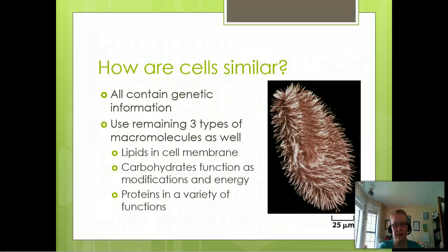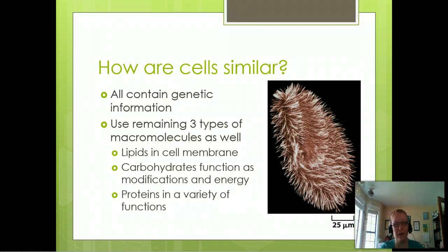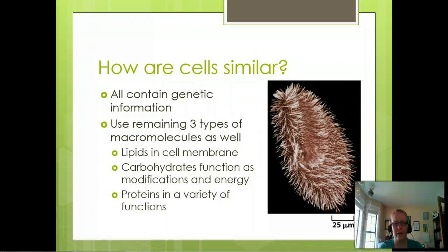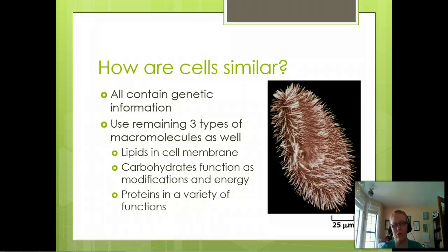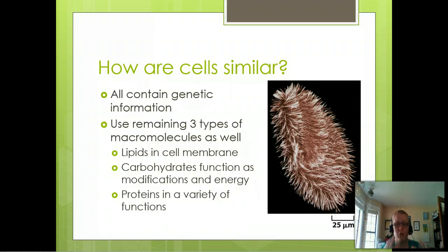All cells contain genetic information — DNA and RNA. All cells also contain all three types of macromolecules: lipids, carbohydrates, and proteins. Lipids primarily make up the cell membrane, and in multicellular organisms they also make up organelle membranes. Carbohydrates mainly serve as the energy source for cells, but they also have an important role in modifying lipids and proteins to change their function within the cell. Proteins provide a variety of functions, and we have an entire chapter dedicated to proteins coming up.